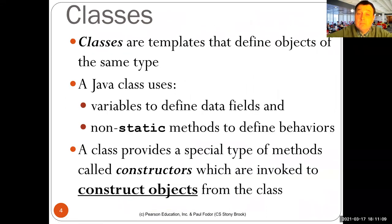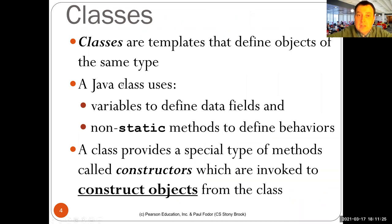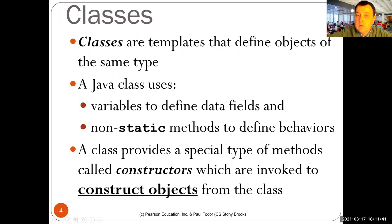So let's return to Java. Classes are templates that define objects of the same kind in Java. A Java class is a template that allows one to define a class of objects. Classes use data field variables to define the data fields, and non-static methods to define the behavior. For instance, getArea is a non-static method that returns the area of the current circle.